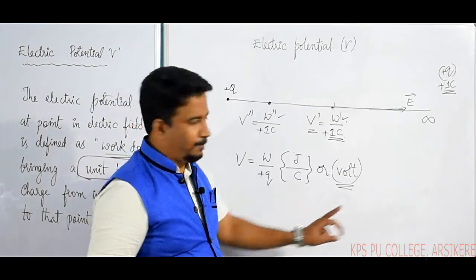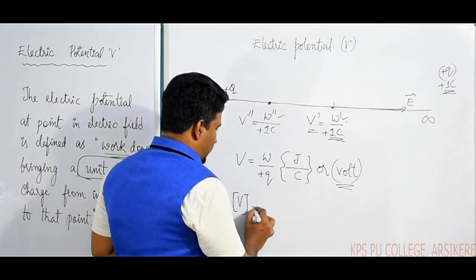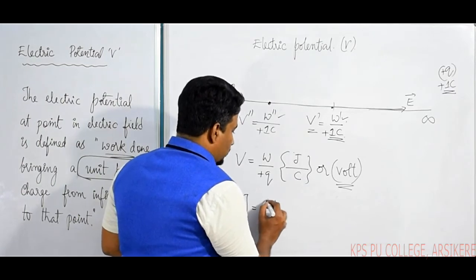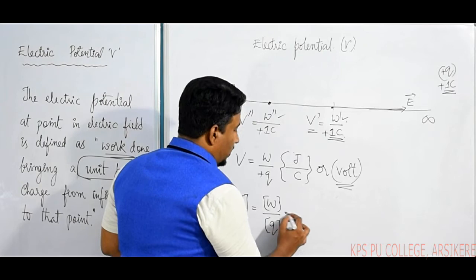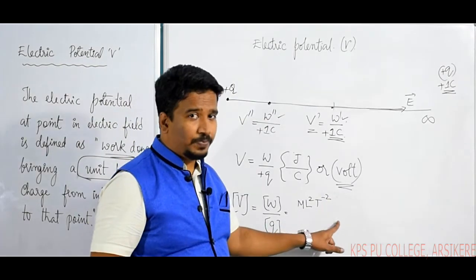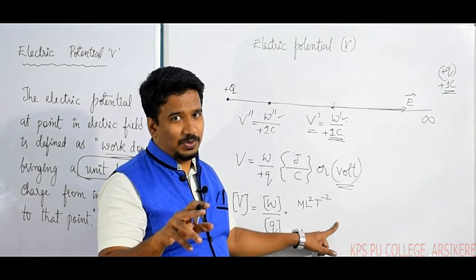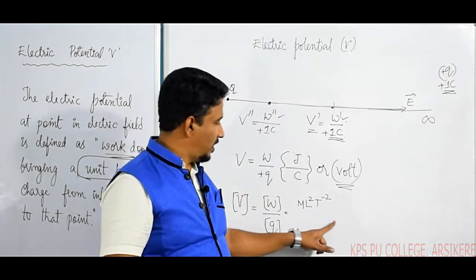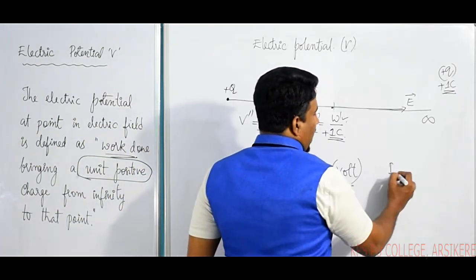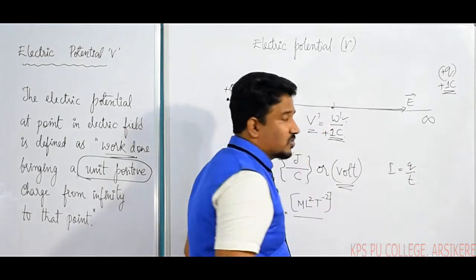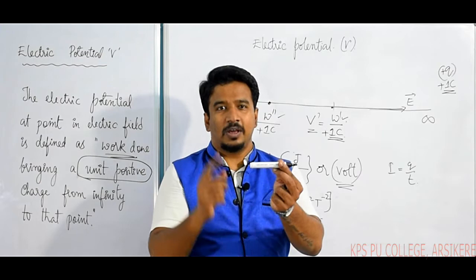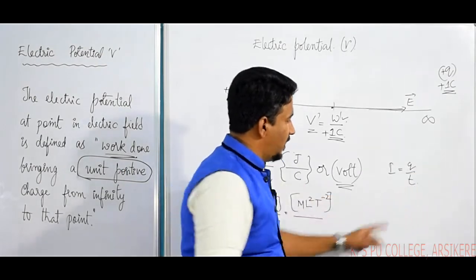Let us write the dimension of Electric Potential. V, generally represented by capital V, is equal to the dimension of work divided by the dimension of charge. Dimension of work is M L squared T to the power minus 2, since work equals force into displacement, and force has dimension M L T to the power minus 2. Now for the dimension of charge Q: current is charge per time, so charge equals current into time.